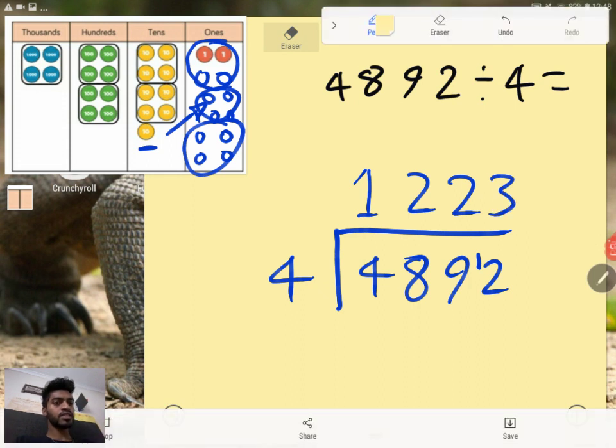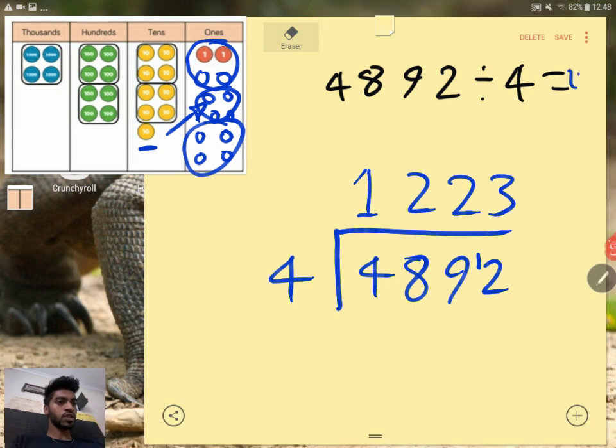So there you have it. 4,892 divided by 4 is equal to 1,223.